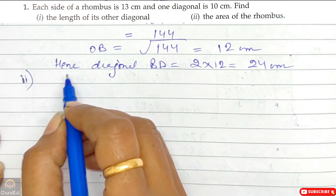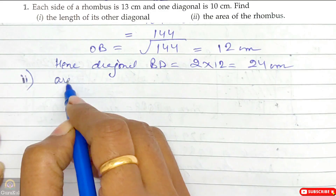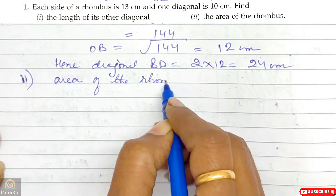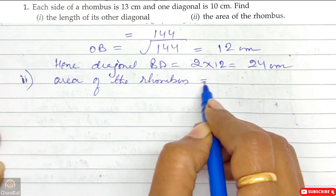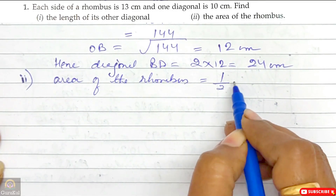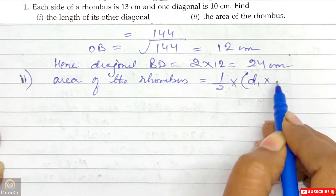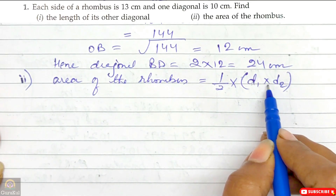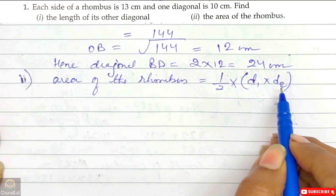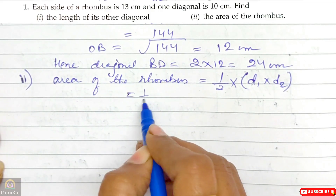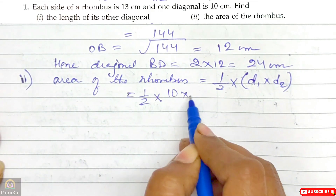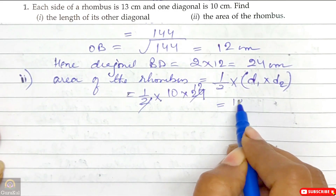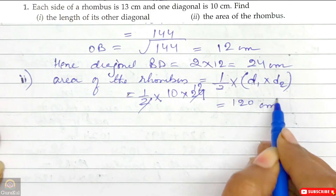Now the second part — we need to find the area of the given rhombus. The formula is half into D1 into D2, that is half into product of diagonal 1 and diagonal 2. So it is half into 10 into 24, giving us 120 centimeter square.